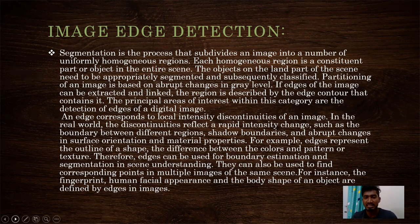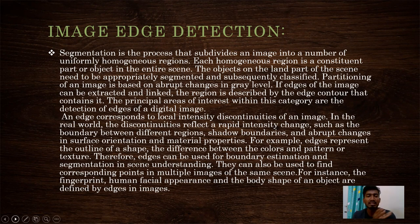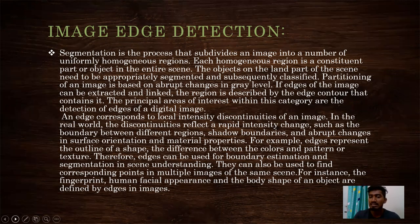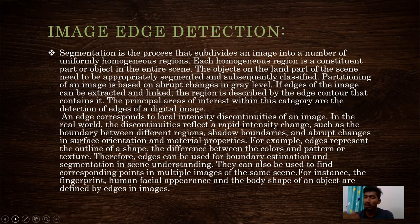An edge corresponds to the local intensity discontinuity of an image. In the real world, this reflects rapid intensity change such as the boundary between different regions, shadow boundaries, and abrupt changes in surface orientation and material properties. For example, edges represent the outline of a shape, the difference between colors, and the pattern structure. Therefore, edges can be used for boundary estimation and segmentation in scene understanding. They can also be used to find corresponding points in multiple images of the same scene — for instance, fingerprints, human facial appearance, and the body shape of an object are defined by the edges of an image.